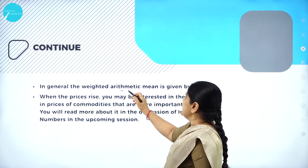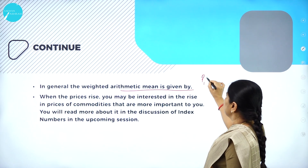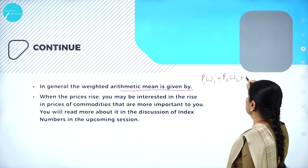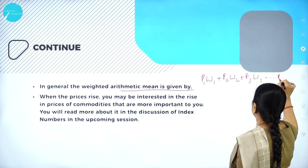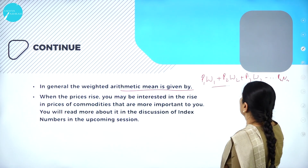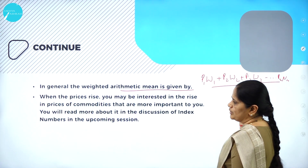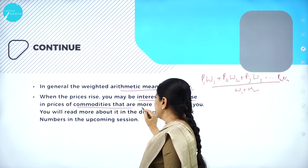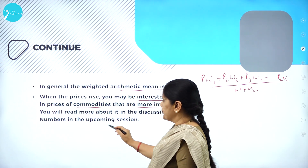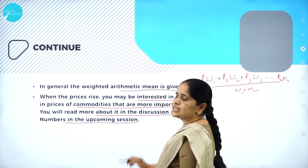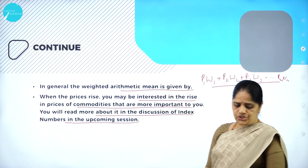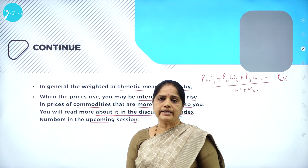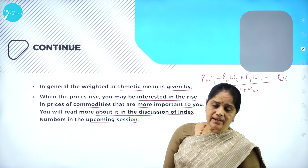In general, the weighted arithmetic mean is given by P1W1 plus P2W2 plus P3W3, up to PNWN, all divided by W1 plus W2. So when prices rise and you want to give more importance to a particular commodity, you add weights to it and then find the mean of that commodity.